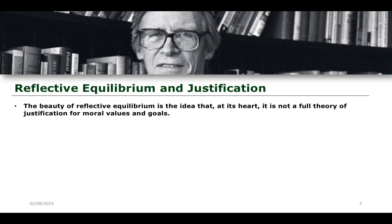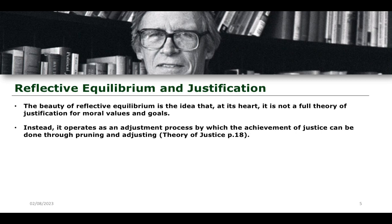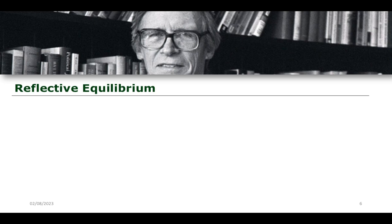This is an additional flexibility given within Rawls's political philosophy. He does not accept that there is a single outcome that will be necessary, nor does he accept that whatever outcome comes from the original position is the only outcome that can be necessary for achieving a just society. Instead, he very flexibly allows for the adjustment of that particular thought experiment. The beauty of reflective equilibrium is that at its heart it is not a full theory of justification for the moral values that we hold. Instead, it operates as an adjustment process — described in A Theory of Justice through the idea of pruning and adjusting, making very small iterative changes to achieve the best outcome possible.